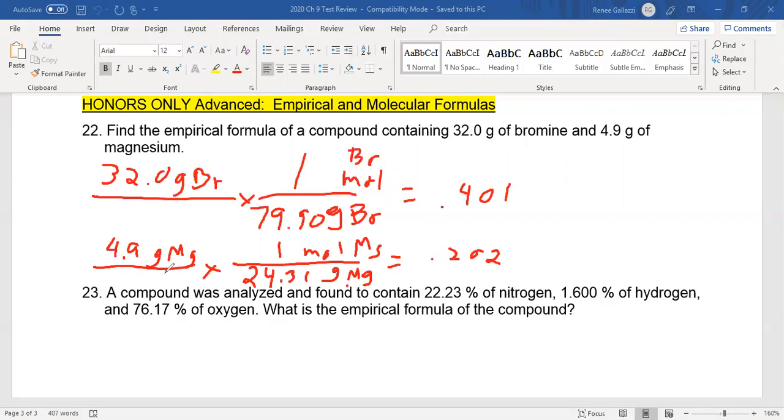And now we've got the magnesium, 4.9 grams of magnesium and we are converting that to moles also and we've got grams of magnesium on the bottom. So if you look up magnesium on the periodic chart, it's 24.31. So we finished this one out and we've got roughly around 0.202.